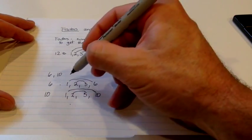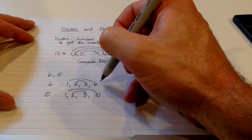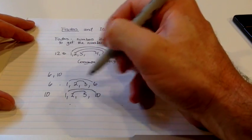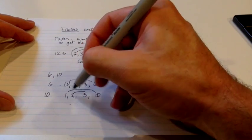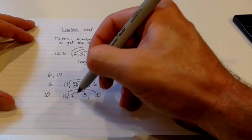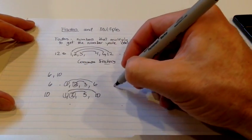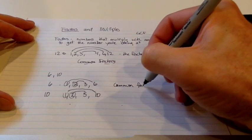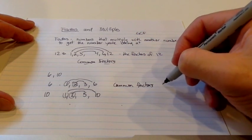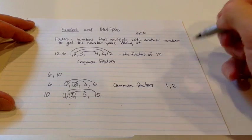The common factors we have, I'm just looking for a number that we see in the top row and that we see in the bottom row. And here, I see the 1 and I see the 2. So the common factors are 1 and 2.